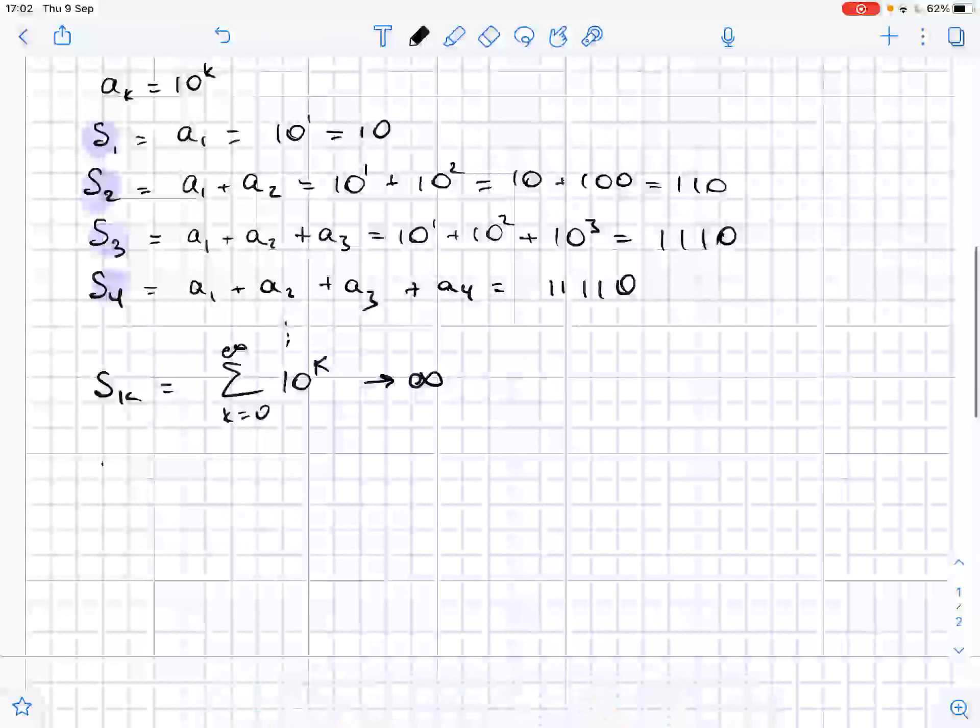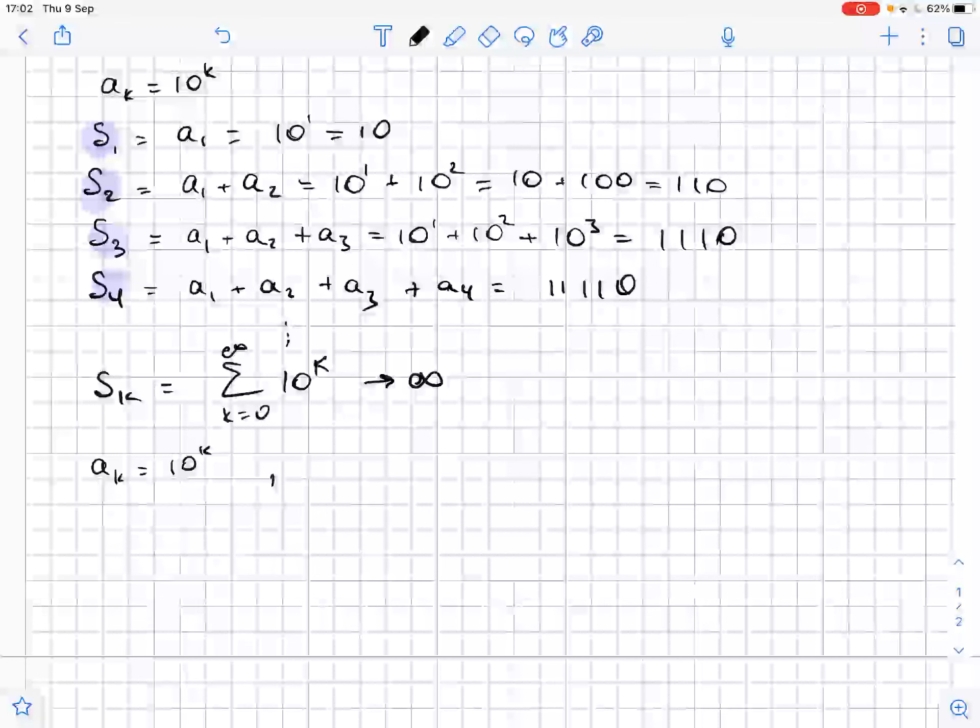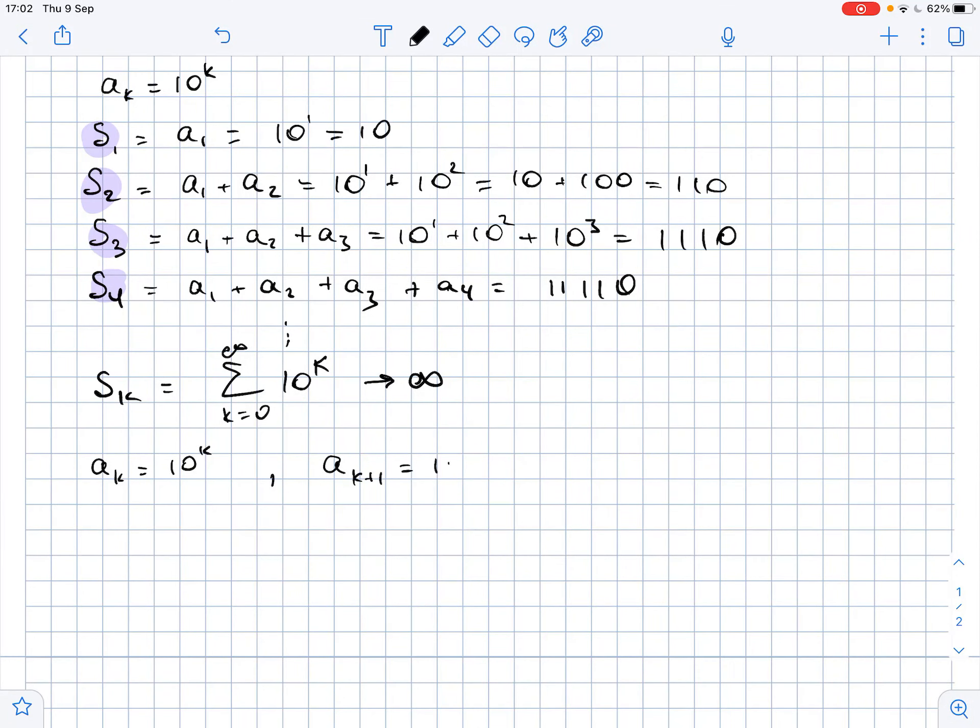Now, we know that the K-th term AK equals 10 to the power of K, so AK+1 equals 10 to the power of K+1. Let's try to find the limit of AK over AK+1, where K approaches infinity.